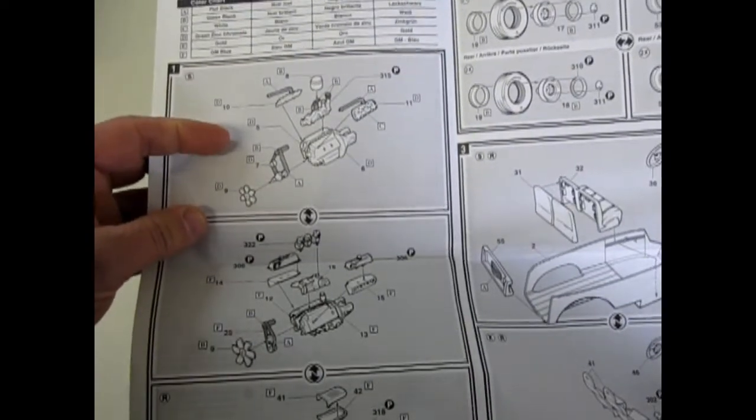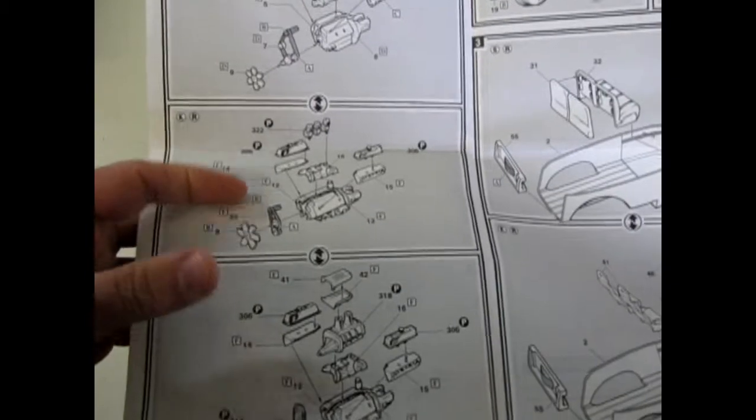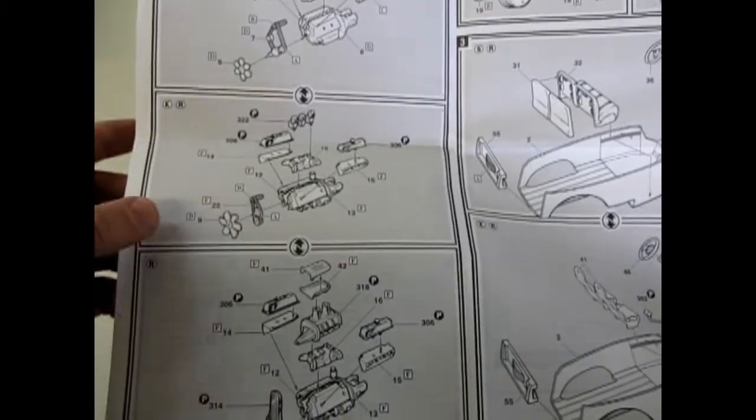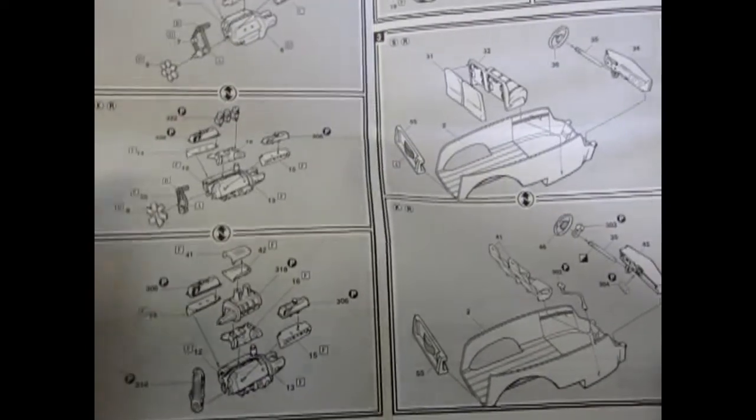The Flathead V8 60 horsepower, the original, and then our Buick nail head with the blower. And you can see these in the Coca-Cola edition as well as the blue box edition of the 40 Ford.